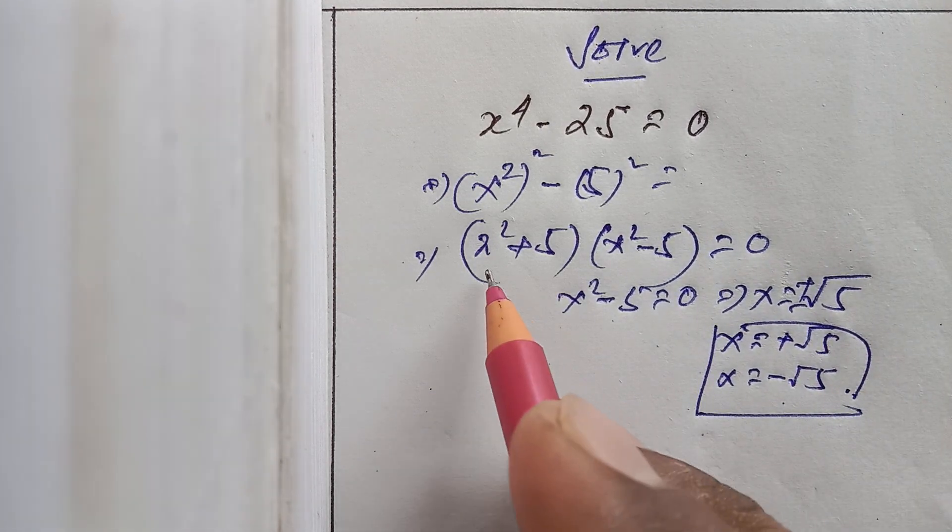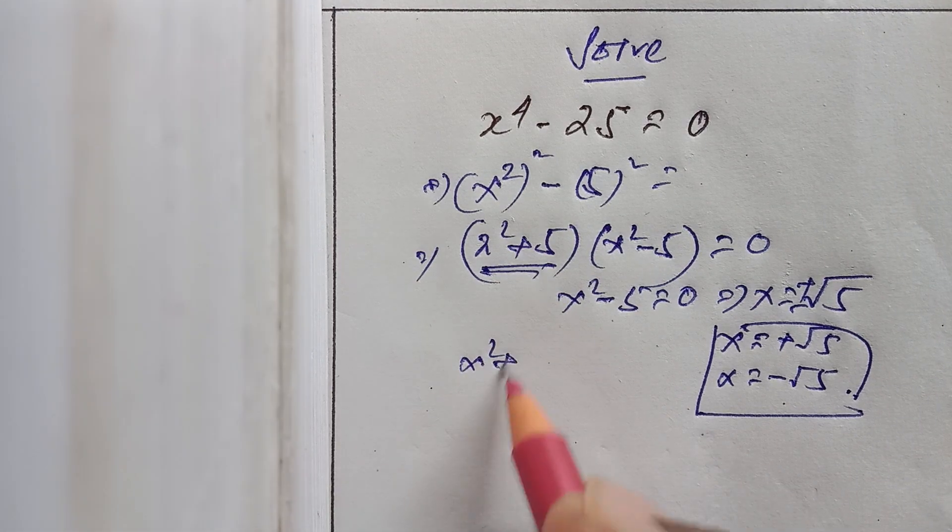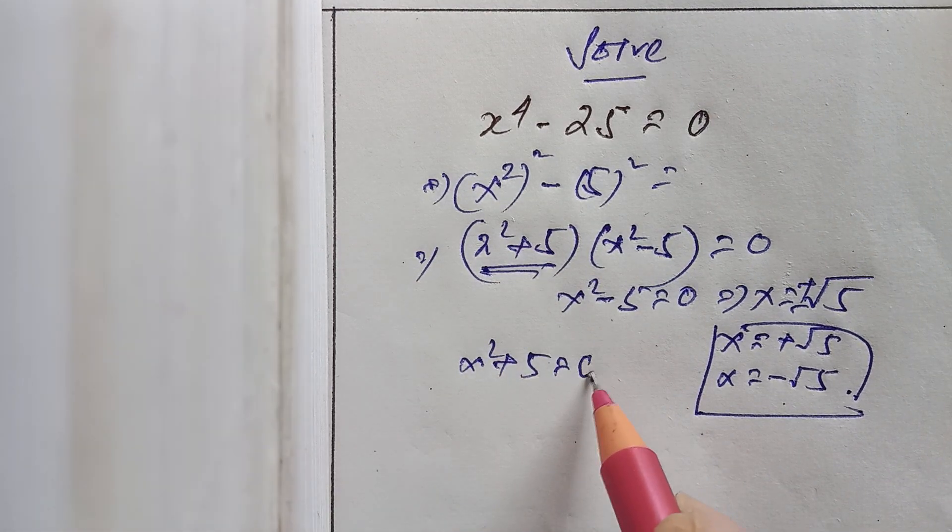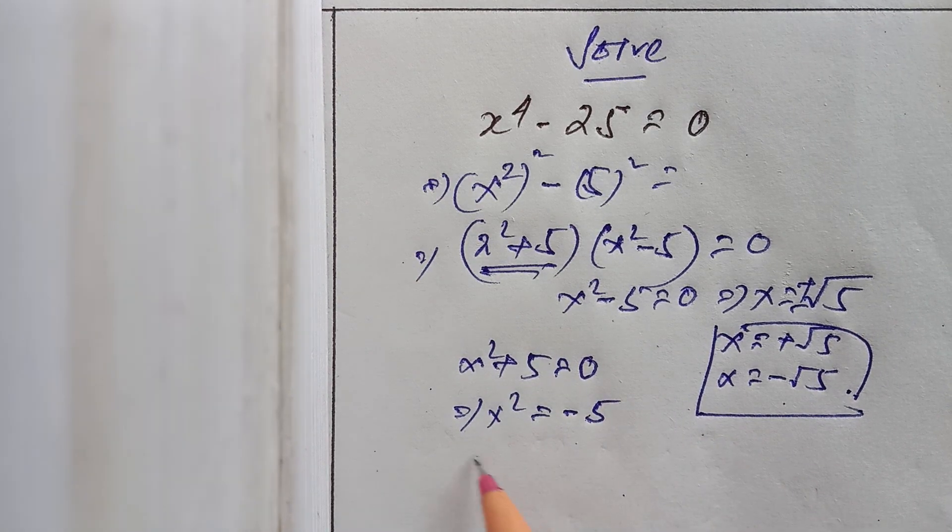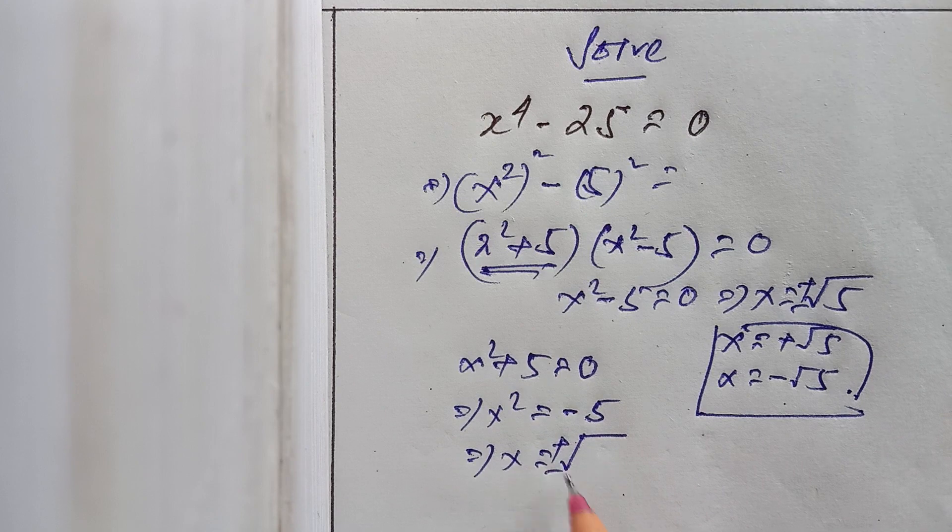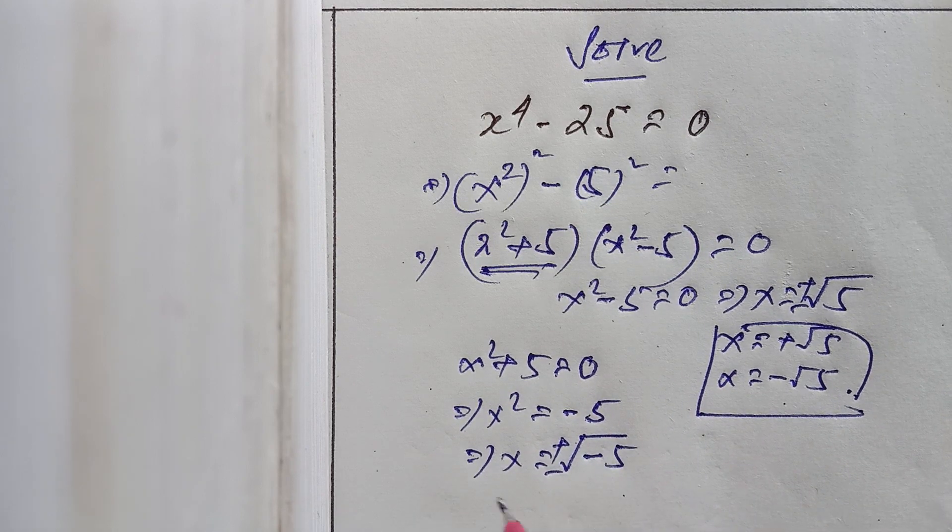Now x squared plus 5 equals 0. So x squared equals minus 5, x equals plus minus square root of minus 5.